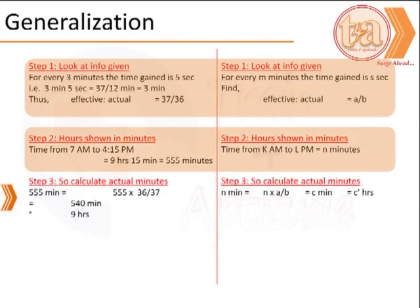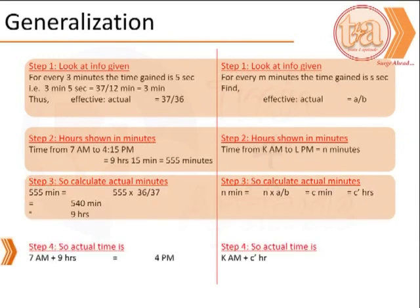The next step is calculating the equivalent of these n minutes by correcting with the proportion we have calculated, let's say c minutes or c dash hours. The last step is calculating the effective time by adding c dash hours to k am, and that gives the answer.